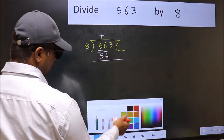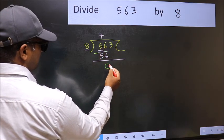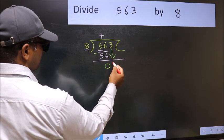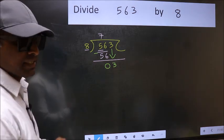Now we should subtract. 56 minus 56 is 0. After this, bring down the beside number, so 3 down. After this step, the mistake happens.